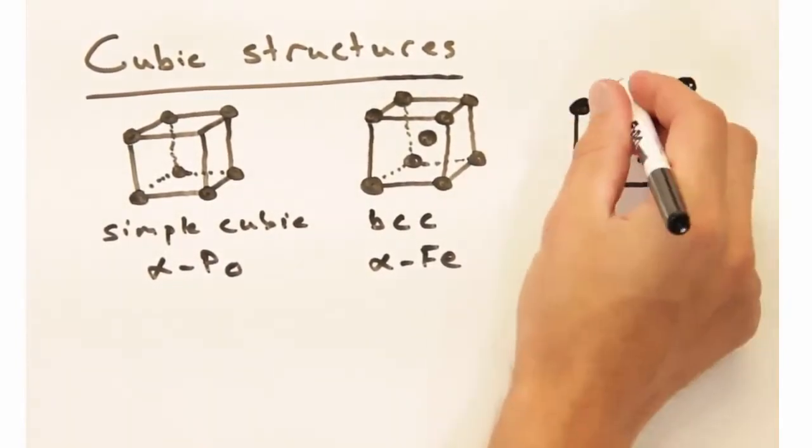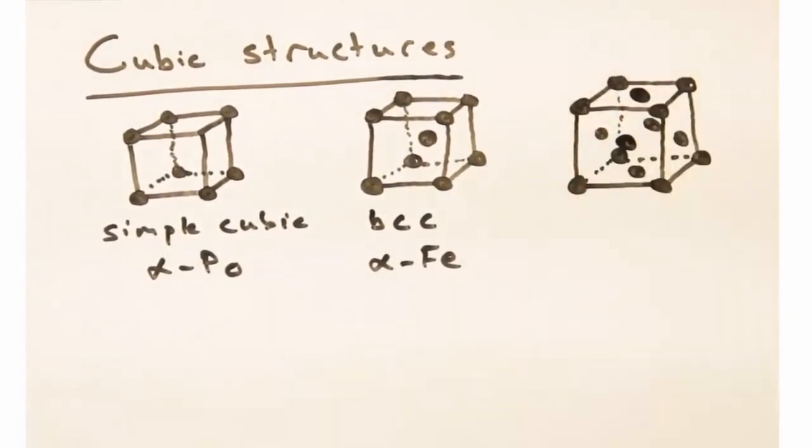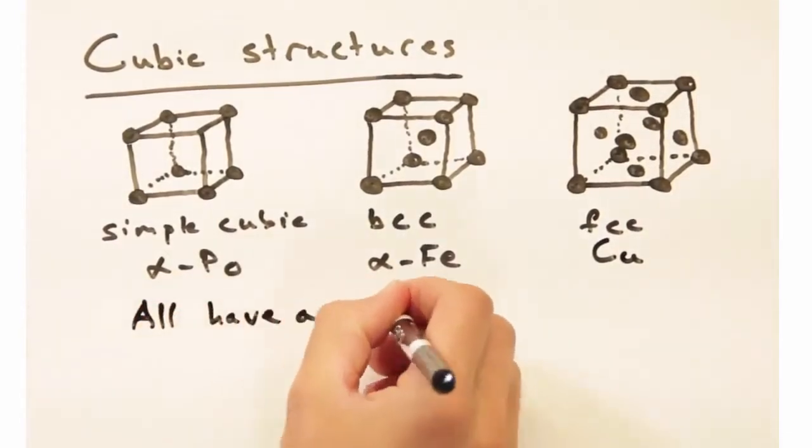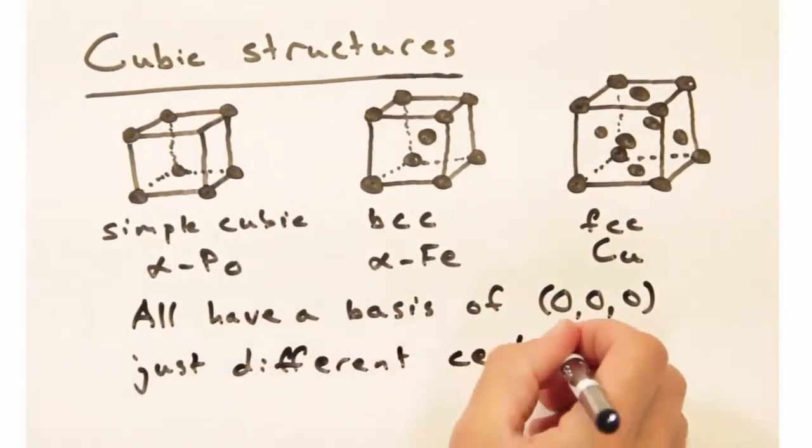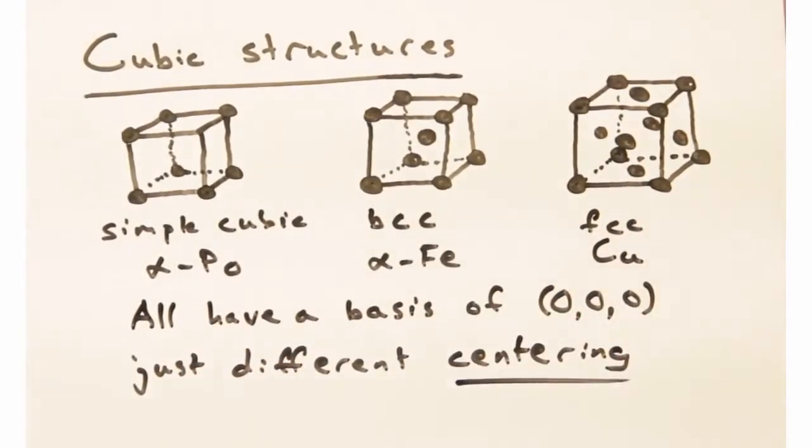These structures are similar in the sense that they're all cubic and share the same basis, one atom at zero, zero, zero. But they differ in what kind of centering they have.